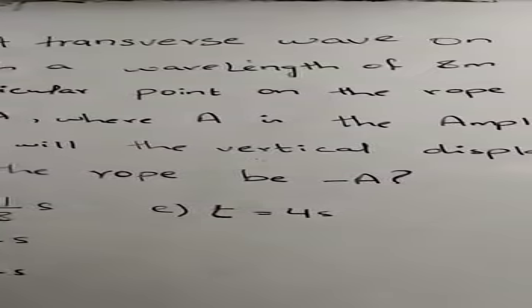At t equals 0, a particular point on the rope has a vertical displacement of plus A, where A is the amplitude of the wave. At what time will the vertical displacement of this same point on the rope be minus A?